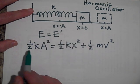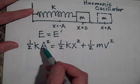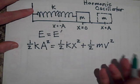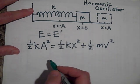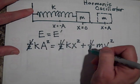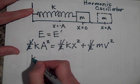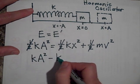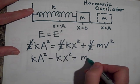We can, since there's a half in each term, we can multiply each term by 2 and then maybe solve for V. Let's do that. Let's solve for V. Okay, so let's get rid of the half. And let me bring this on the other side. So K A squared minus K X squared is equal to M V squared.